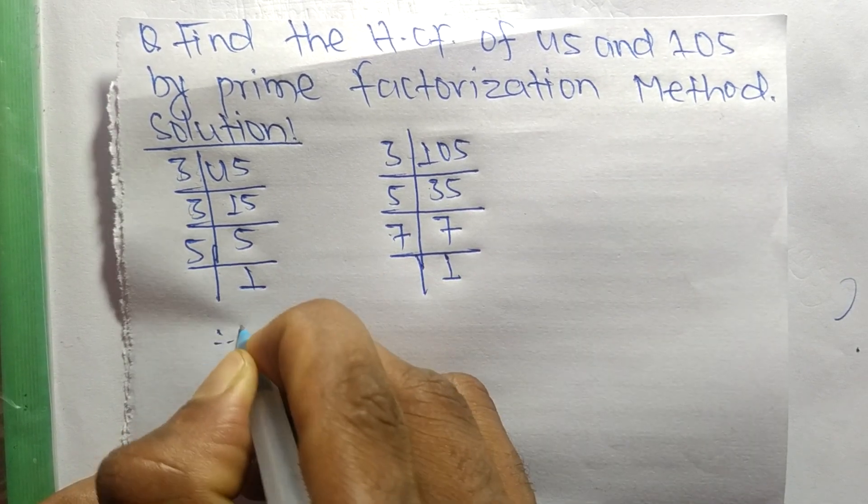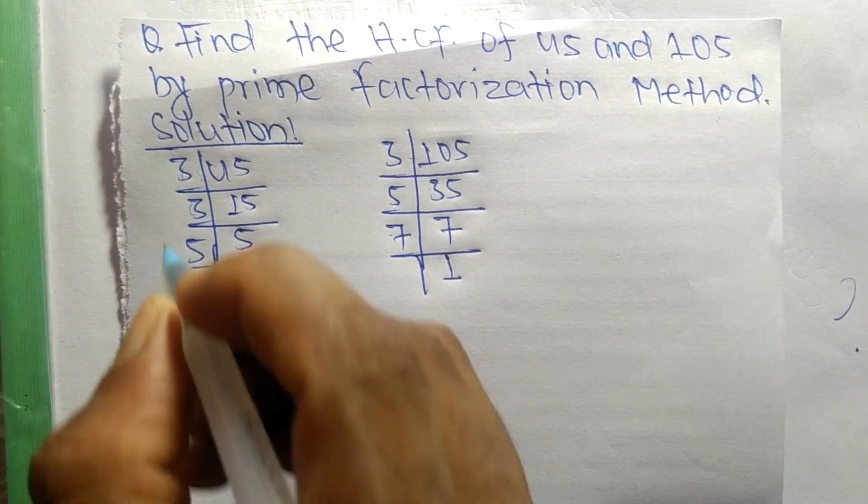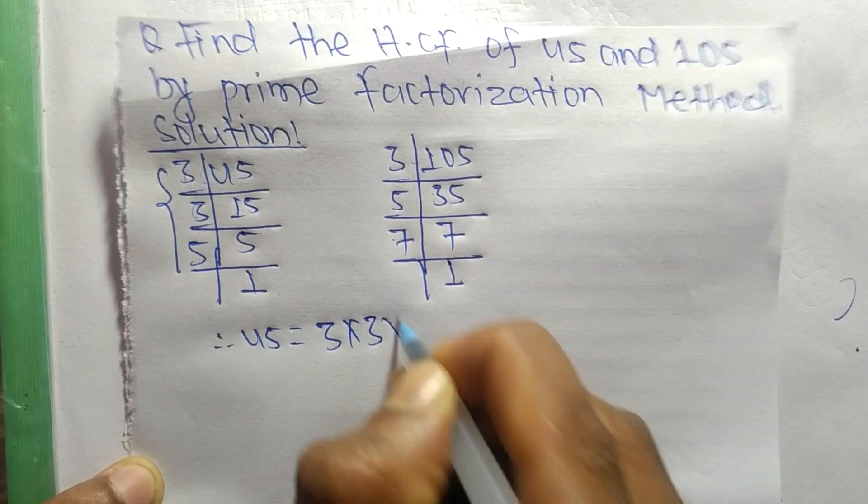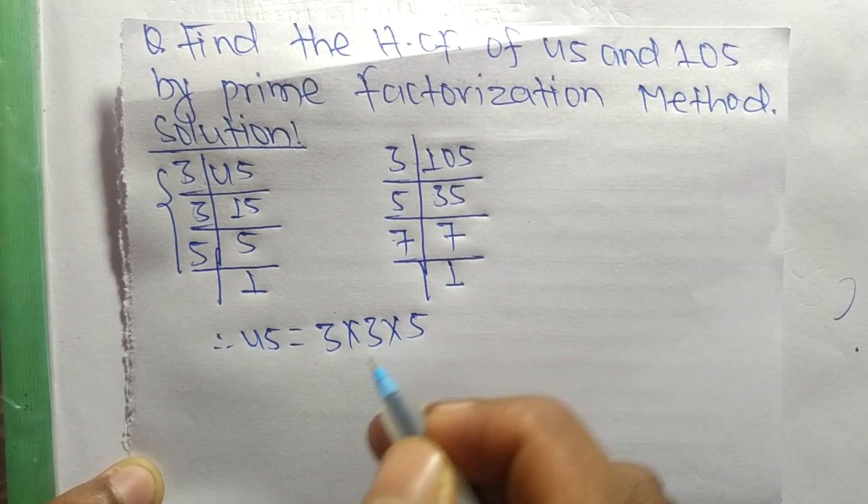we can write 45 equals 3 times 3 times 5.